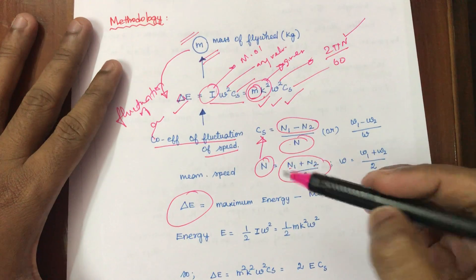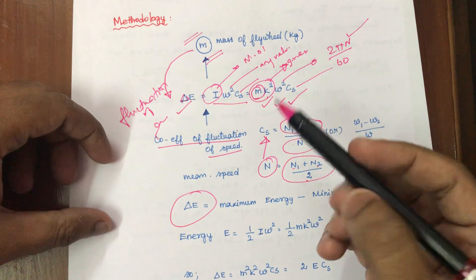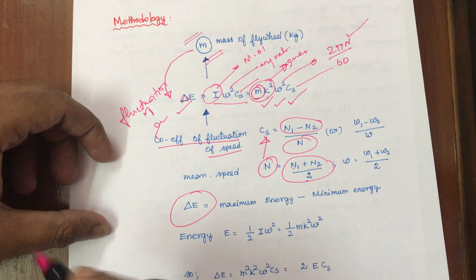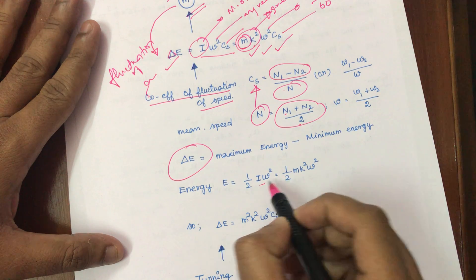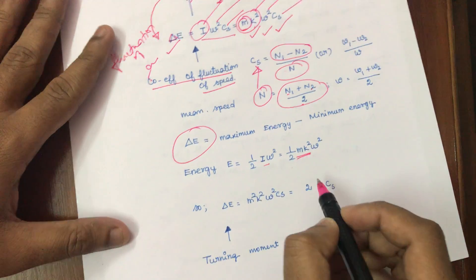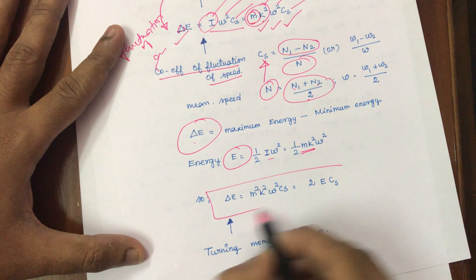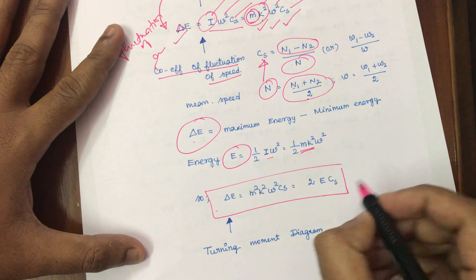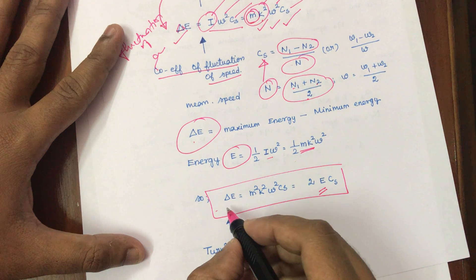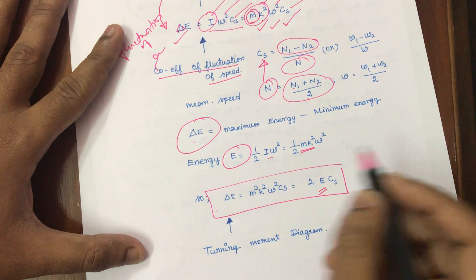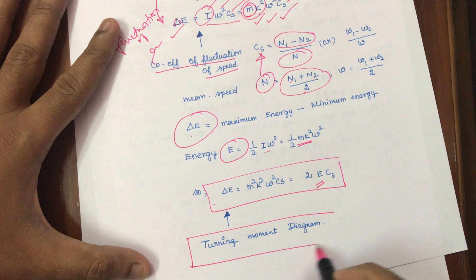If you look at the turning moment diagram, we can grasp the del E value from it. Then using the normal energy formula — half into I·ω² — and I = mk², we can relate energy and fluctuation of energy. Del E is equal to 2·E·Cs. Once one energy value is calculated, we can directly calculate the del E value.